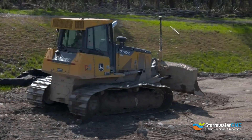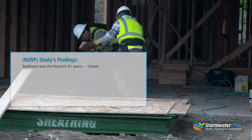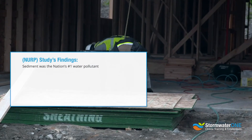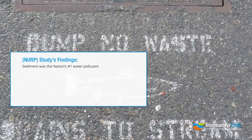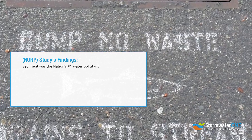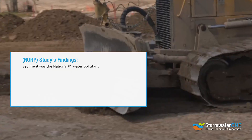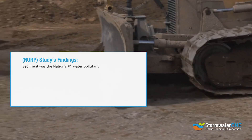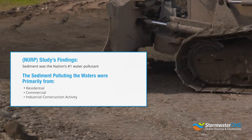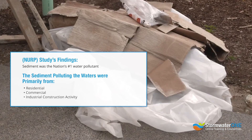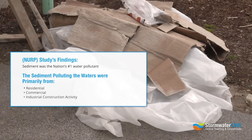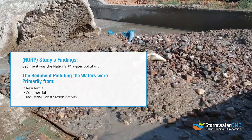From this study, it was determined that sediment was the nation's number one water pollutant. What was most surprising in the study's findings was that the sediment polluting the waters was primarily from residential, commercial, and industrial construction activity.